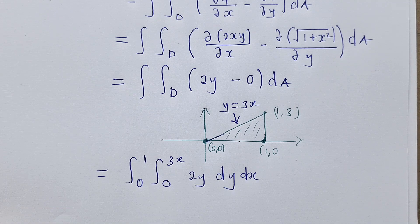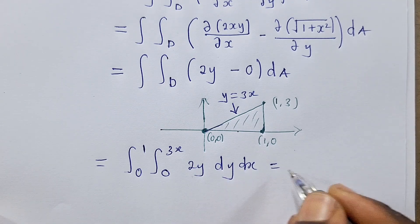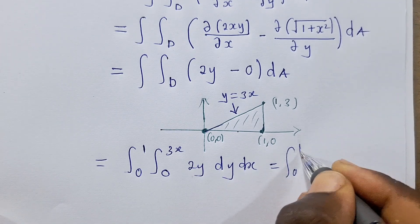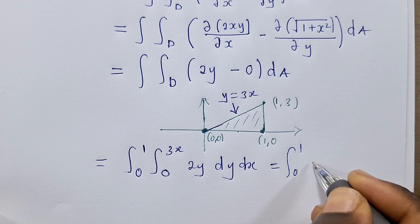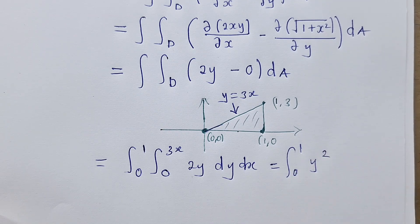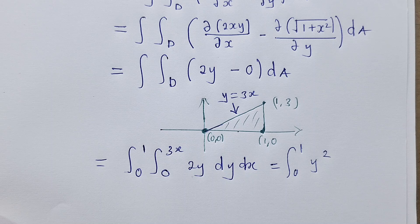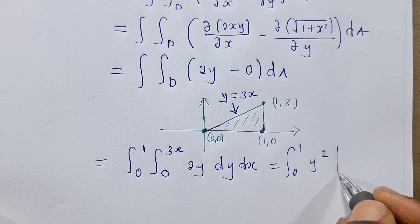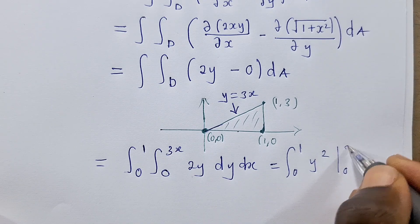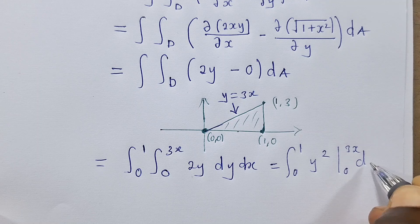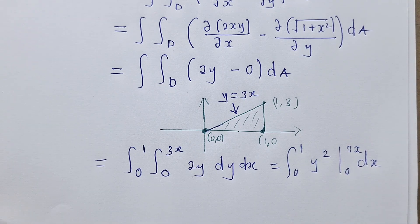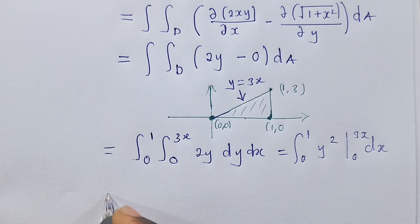Now we can finish it up from here. This will be the integral from 0 to 1, this will be y squared, and then here we've got 0 to 3x dx. These are the limits.